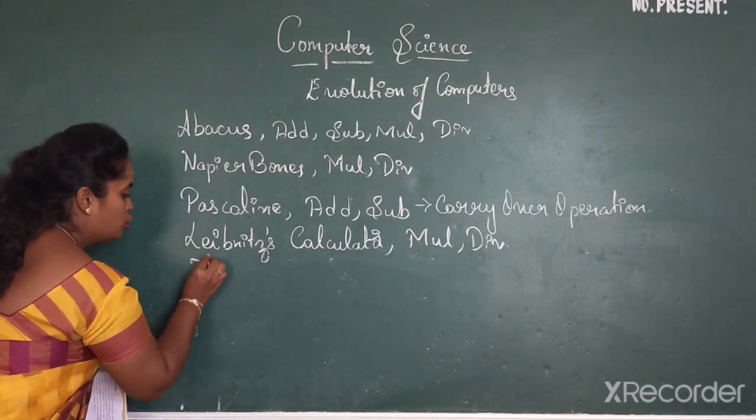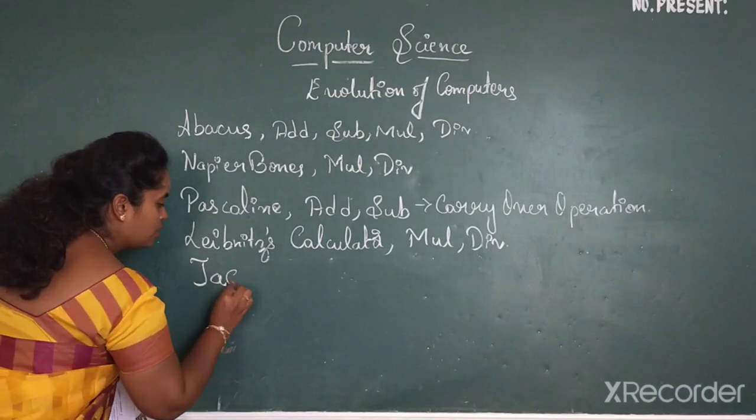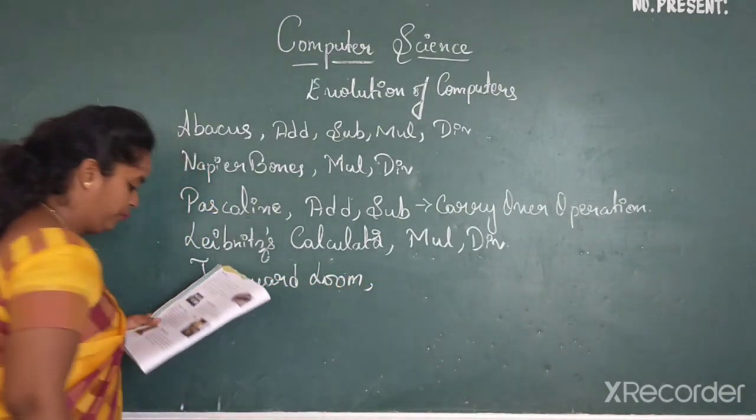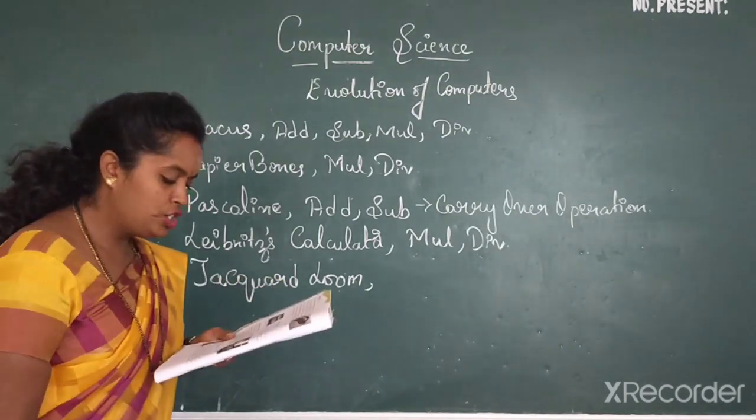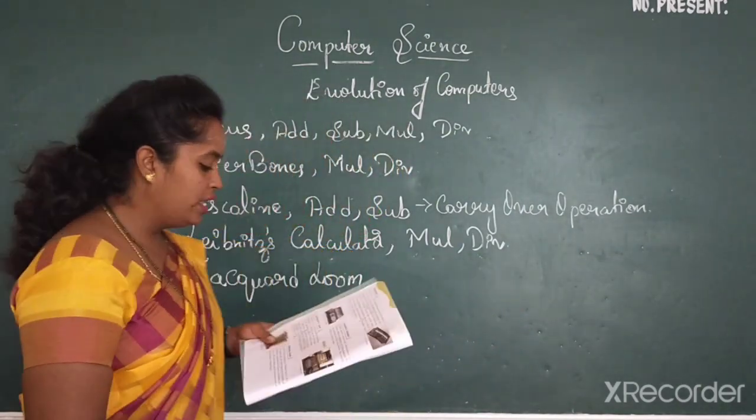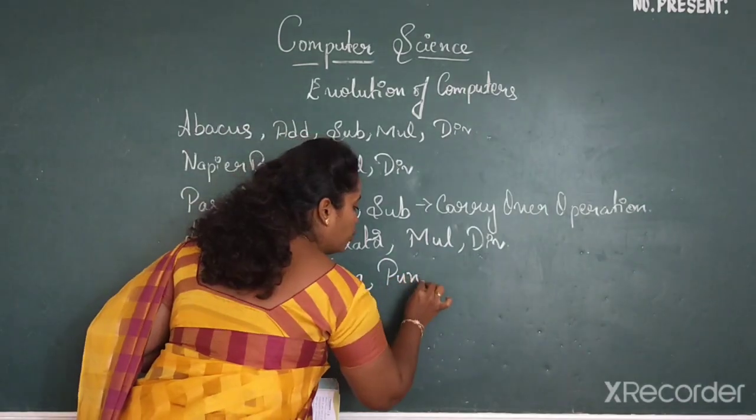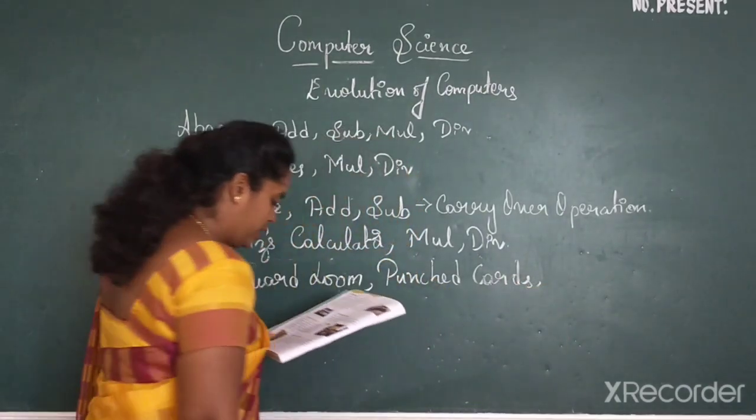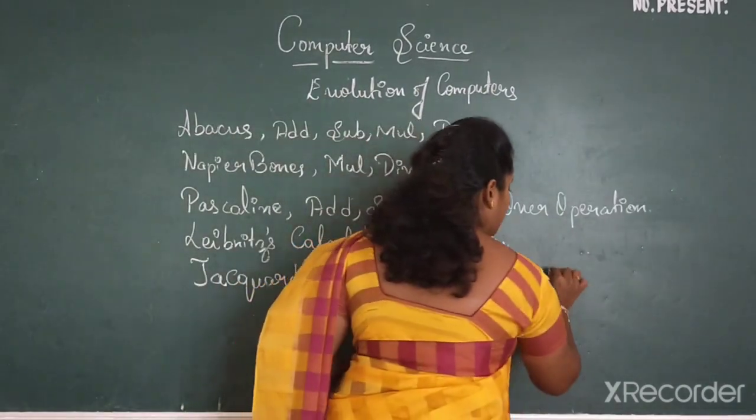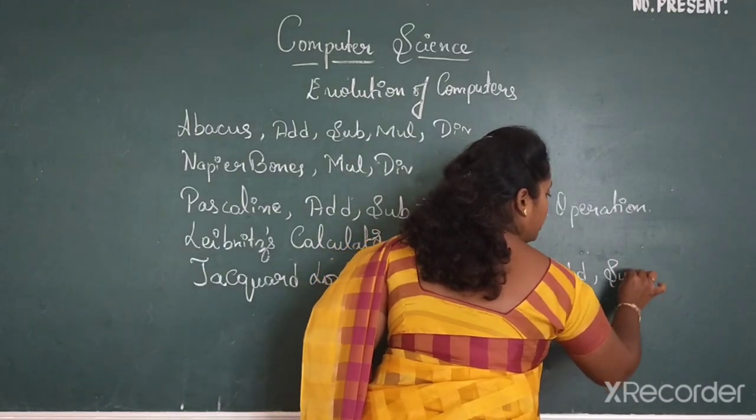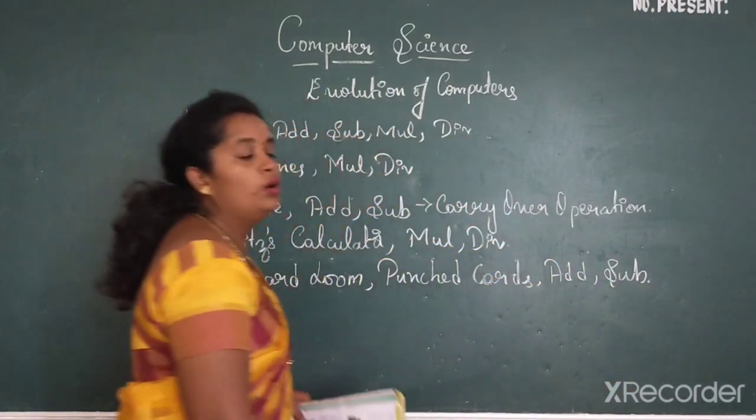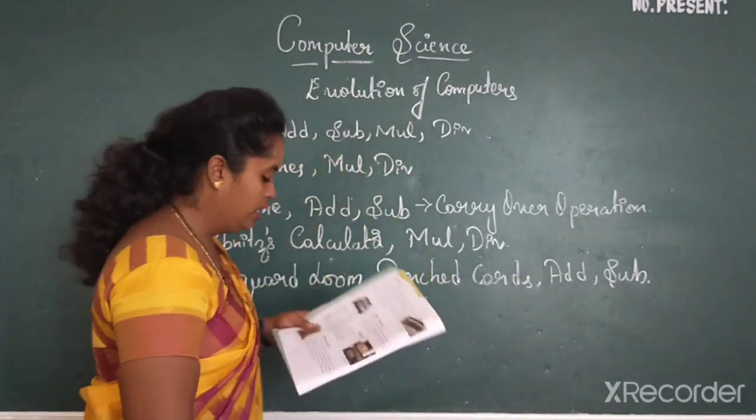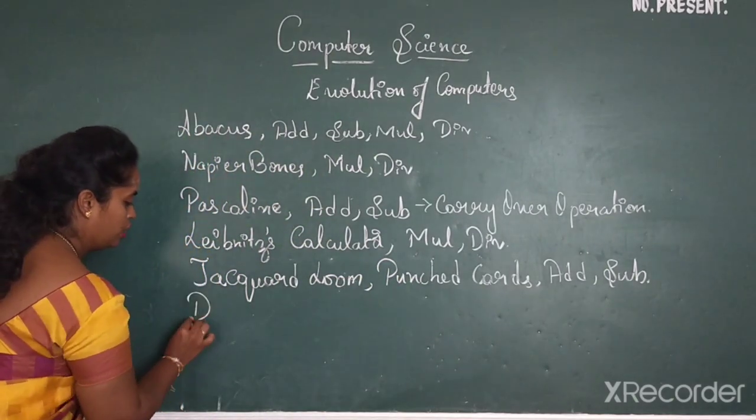Then comes Jacquard loom. Joseph Marie Jacquard invented this machine using the punched cards. Calculations were done using the punched cards. This machine also was used to do the addition and subtraction calculation.